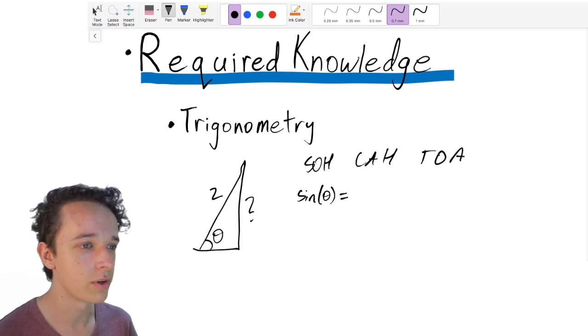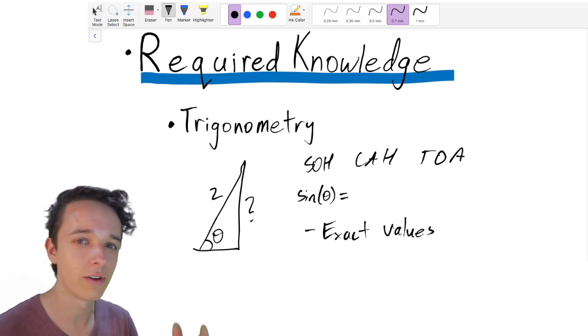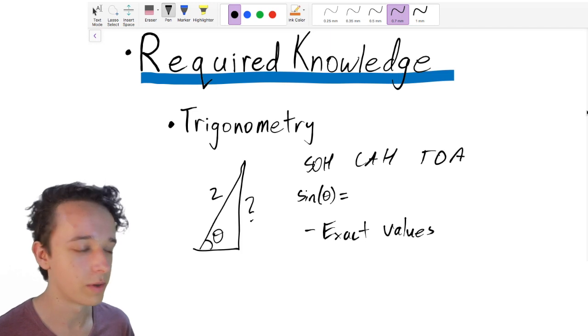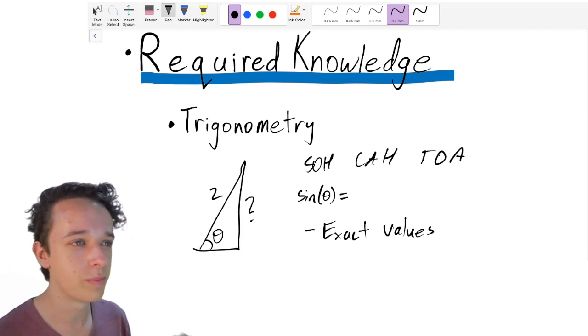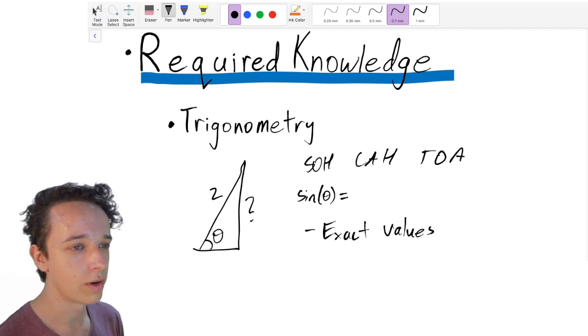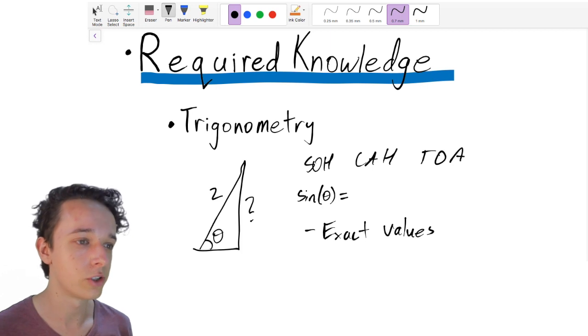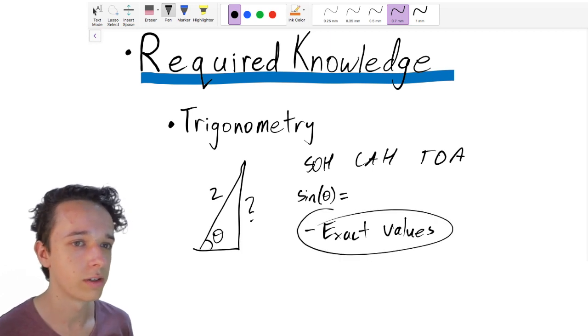The other thing that you should at least be aware of is exact values. So it's not super important, but I never memorized the exact values when I was in high school. Because you know, you have a calculator, you can figure them out. But you should be aware that they exist. Because sometimes in your work you want to keep an exact value, rather than rounding it off to a decimal, because then you lose some accuracy in the final answer. So I suggest you be aware of the presence of exact values.